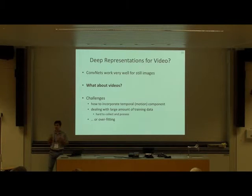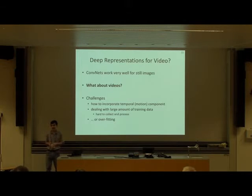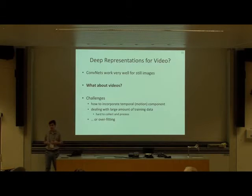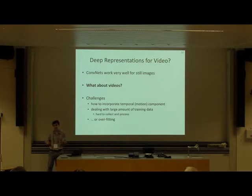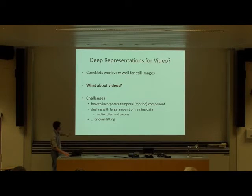Another issue is how to deal with data scale. ImageNet contains 1.2 million images, which if stored as JPEG take about 20GB. But if you have 1.2 million videos, the storage is much larger. And if you don't have such amounts of data, you're going to have overfitting. These are the challenges which need to be addressed.